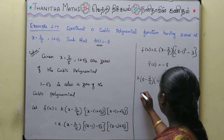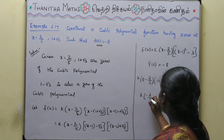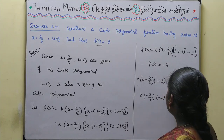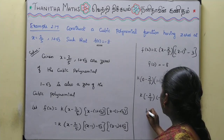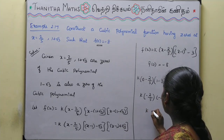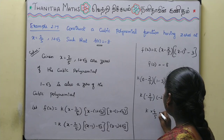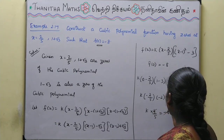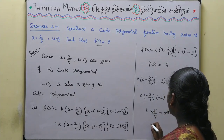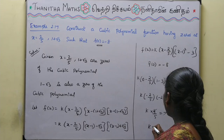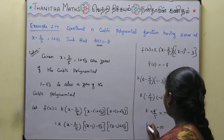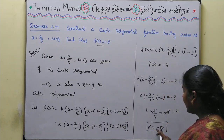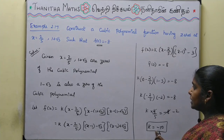So f(0) = -8 gives us k · (4/5) = -8. Cancelling and solving: k = -8 · (5/4) = -10. Therefore k = -10.